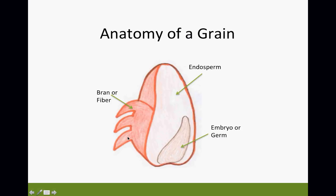Gluten is the protein that is found in the endosperm — the inner portion of the grain. This is where we tend to have our white flour, our white rice. That white item is the endosperm, the inner portion of the grain.